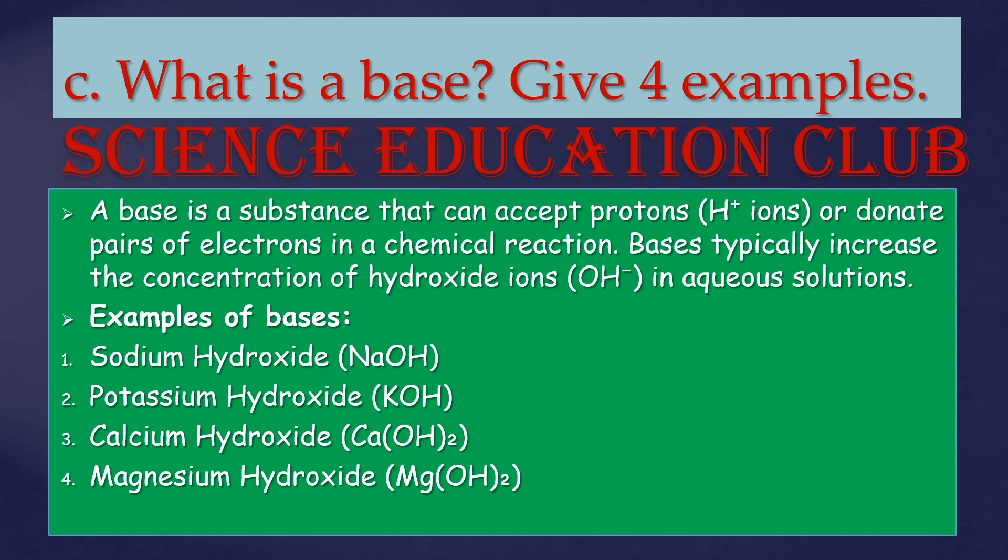What is a base? Give four examples. A base is a substance that can accept protons or donate pairs of electrons in a chemical reaction. Bases typically increase the concentration of hydroxide ions in a solution. Examples of bases: sodium hydroxide, potassium hydroxide, calcium hydroxide, and magnesium hydroxide.